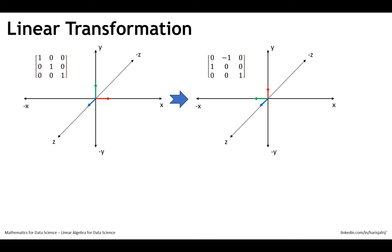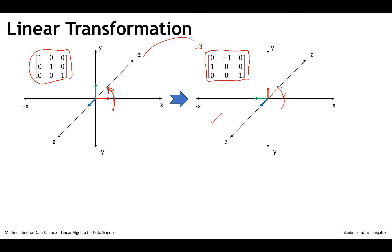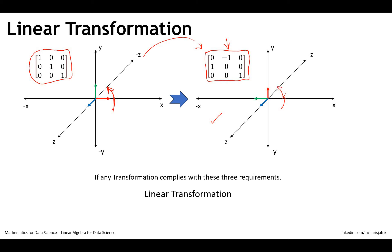On the left-hand side, this is the matrix representing the coordinates of the basis vectors before transformation, and on the right is the matrix representing the coordinates after transformation. The transformation was rotating the XY plane 90 degrees counterclockwise. When we rotated the XY plane 90 degrees counterclockwise, we reached this position — this is the graphical representation and this is the mathematical representation. So if any transformation complies with these three requirements, it is a linear transformation.